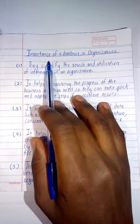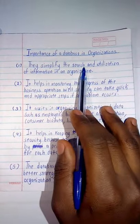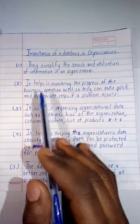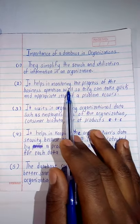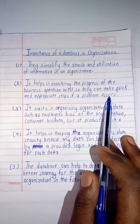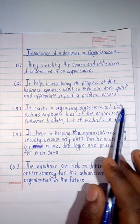Moving on, importance of a record in organizations: they simplify the research and utilization of information in an organization. Then it helps in monitoring the progress of the business operation well, so they can take quick and appropriate steps if a problem occurs.